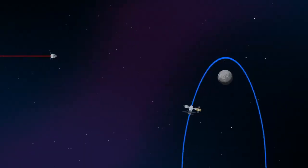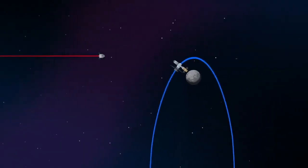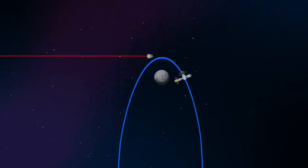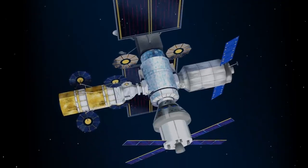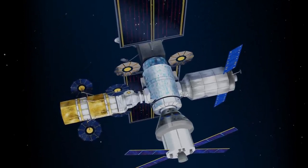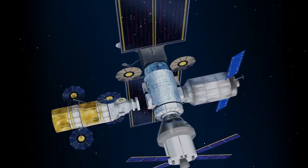Returning to our crew as they approach Gateway, the Orion must match the elliptical orbit of the station in order to successfully dock. Once on board, pre-selected crew members transfer to the lunar lander, while those assigned to Gateway remain on station.